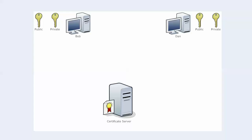We've brought our old friends Bob and Dan back from previous videos. They're looking a little better now — they've been upgraded. We're going to start this process from the very beginning with Bob and Dan both having a key pair, which is a clever little name for our private key and our public key. The public key can be seen by everyone, and the private key by no one — well, no one except the possessor of the actual key.